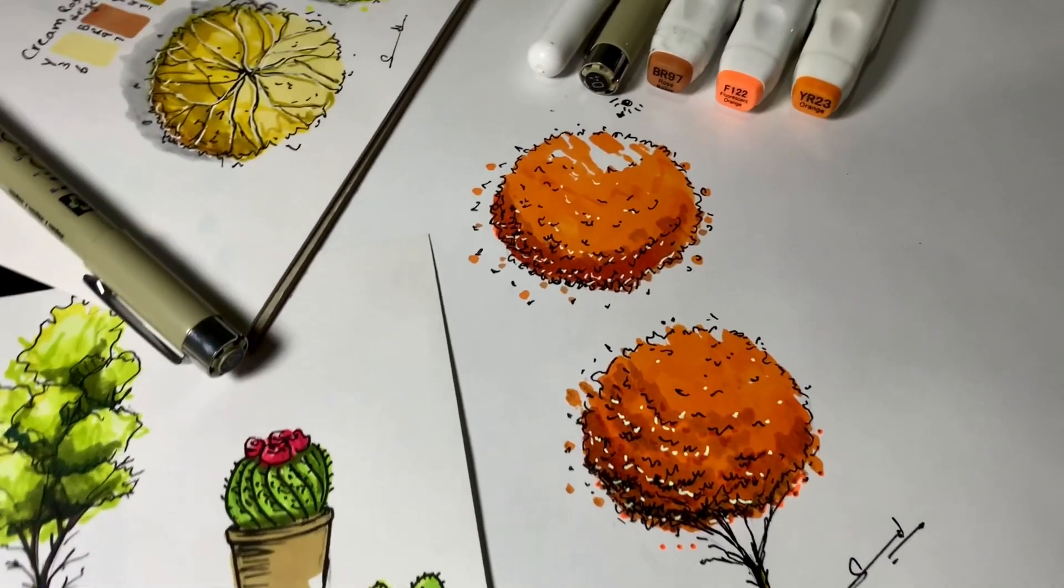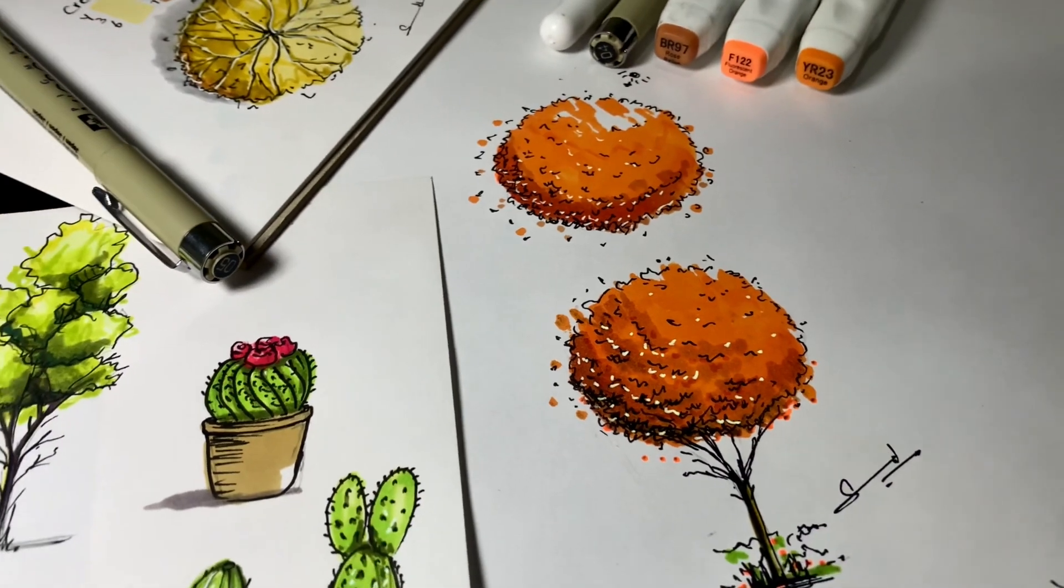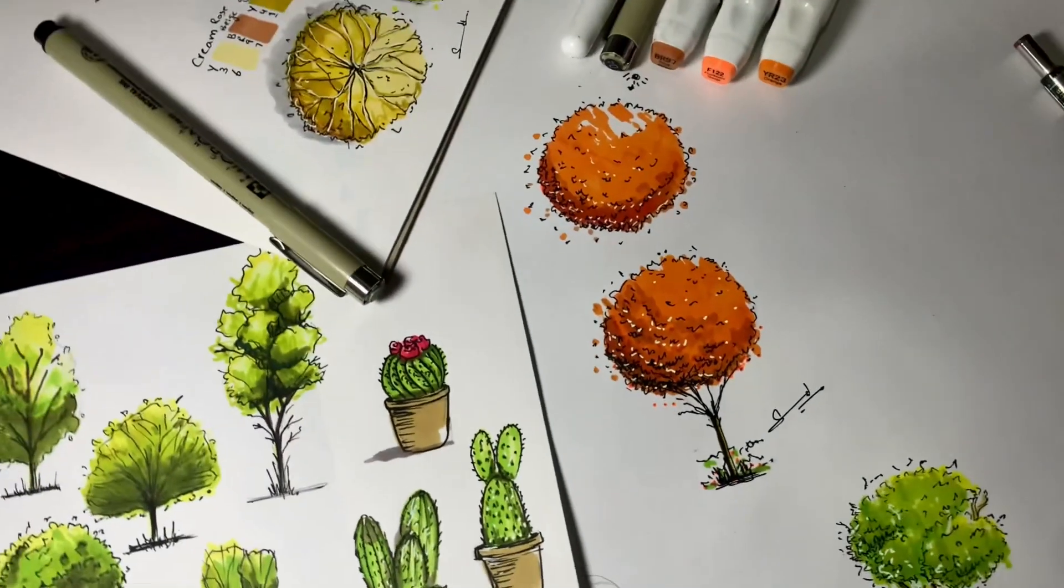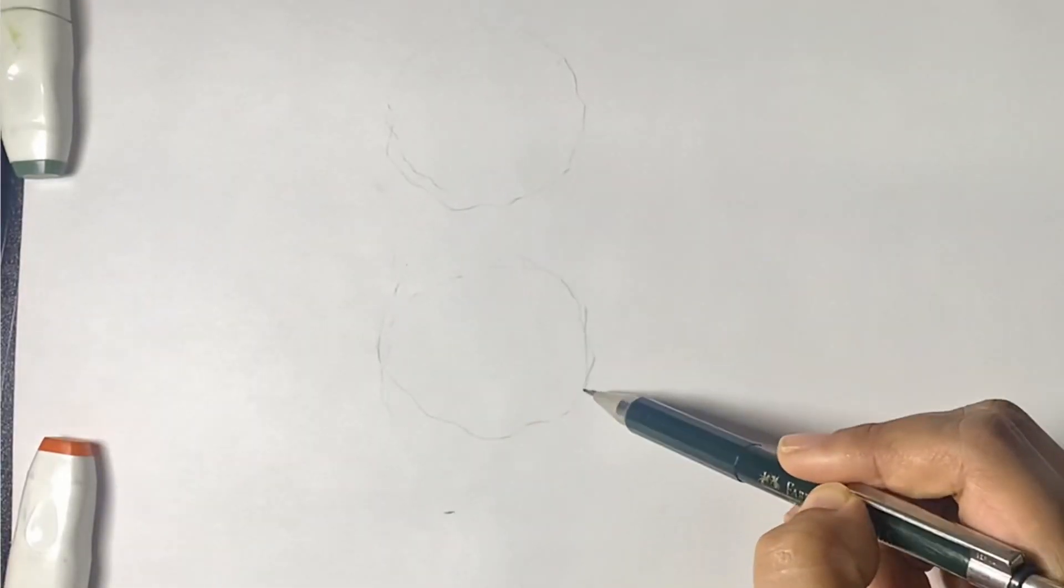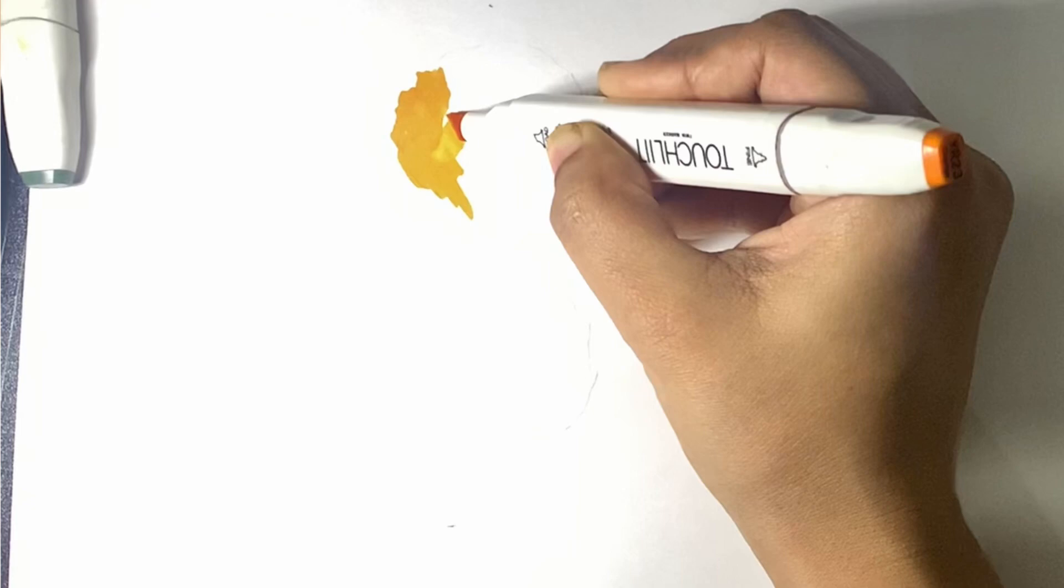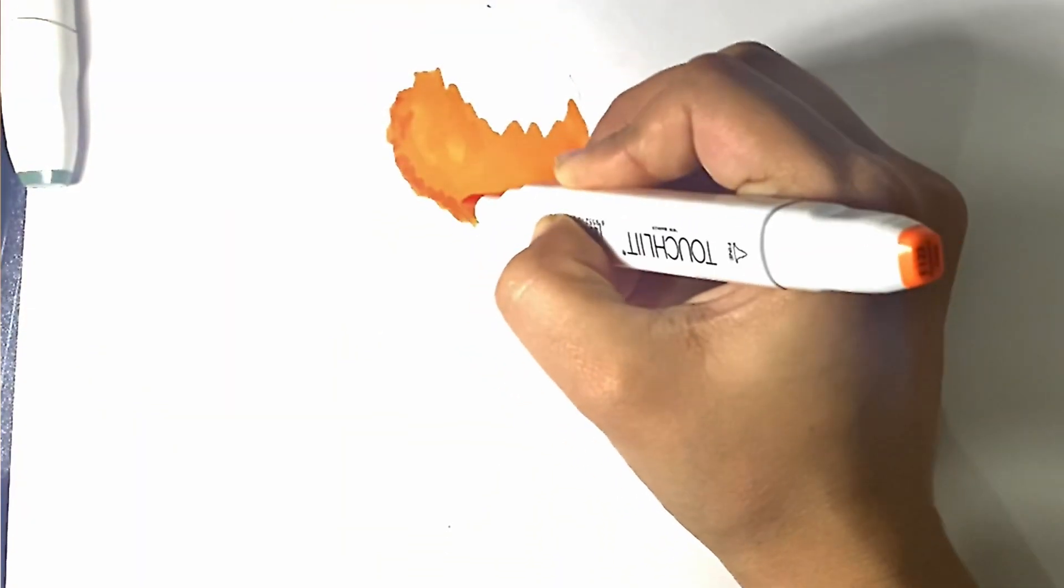Hello and welcome to my channel Ourscapes. Today we're going to learn how to draw this beautiful orange tree and how to render it using markers. First, we're going to sketch out a basic circle for our tree plant and tree elevation.